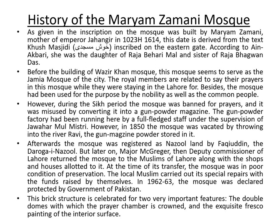During the Sikh period, the mosque was banned for prayers and converted into a gunpowder magazine, run by a full-fledged staff under the supervision of Jawahar Mal Mistri. However, in 1850, the mosque was vacated and the gun powder stored in it was thrown into the River Ravi. Later, Major McGregor, the deputy commissioner of Lahore, returned the mosque to the Muslims along with shops and houses allotted to it. In 1962–63, the mosque was declared protected by the Government of Pakistan. It is celebrated for two important features: double domes and exquisite fresco paintings.